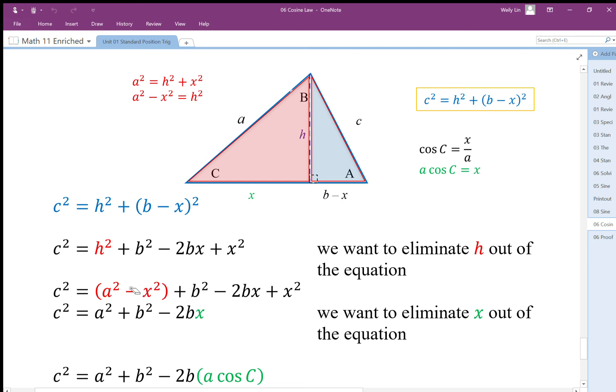We're going to get rid of those, so we end up with a² plus b². It's starting to look like our Pythagorean theorem, and then we have this extra bit here, 2bx, because of that non-90 degree triangle.